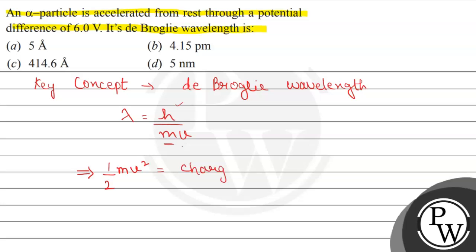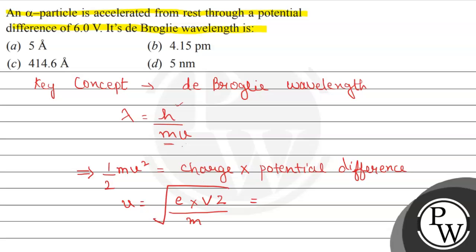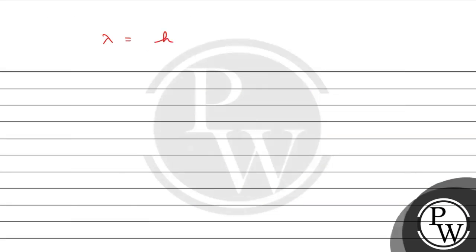The kinetic energy equals charge multiplied by the potential difference. From this relation we can find v: v = √(2eV/m). Substituting this into the De Broglie formula, the wavelength becomes λ = h / (m × √(2eV/m)), which simplifies to λ = h / √(2meV).